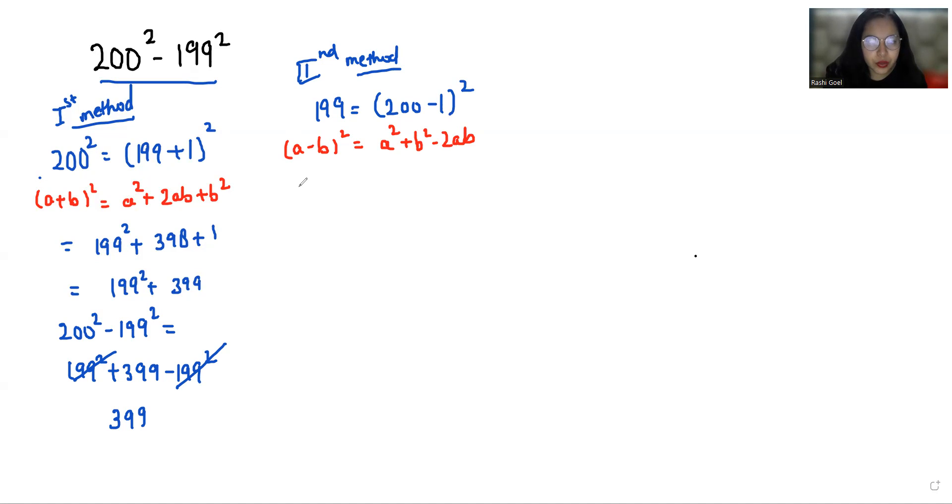So a is 200, 200 square plus 1 square is 1 minus 2 times 200 times 1 that is 400. So 200 square minus 399.